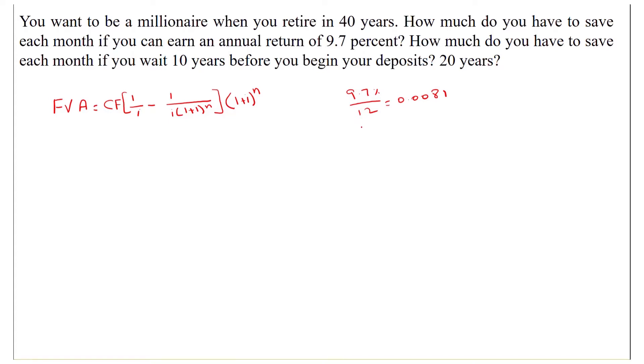n is 40 years, and we will multiply these 40 years by 12, so 40 times 12 is 480. That will be n in this question, and we have to solve this question for cash flows.